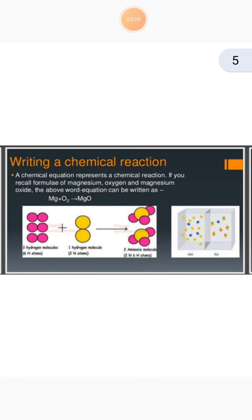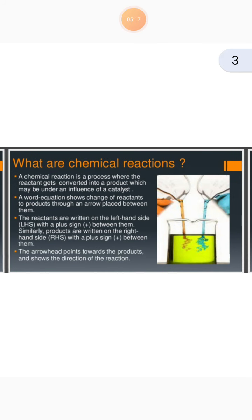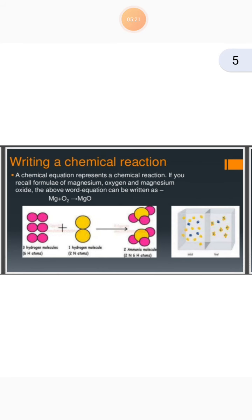Next is writing a chemical reaction. How can you write a chemical reaction? I have told you on the previous slide. Now, on slide number 5, I have told you how we can write it. A chemical equation represents a chemical reaction. If you recall the formula of magnesium, oxygen, and magnesium oxide, the word equation can be written as magnesium and oxygen reacting to give magnesium oxide. This reaction is not balanced, and I will tell you how to balance it.